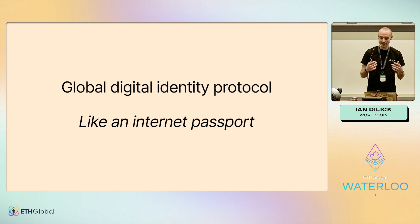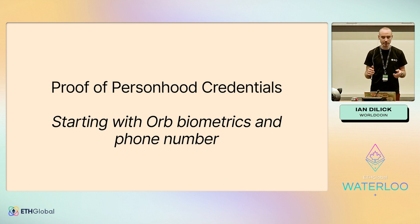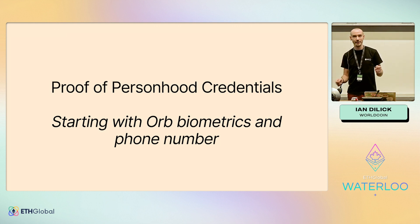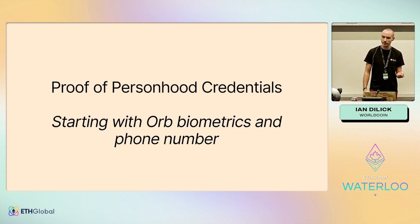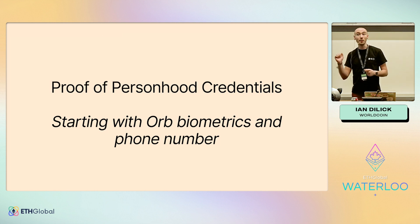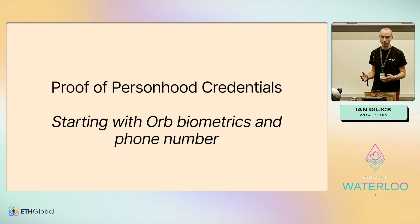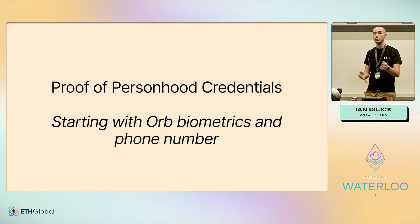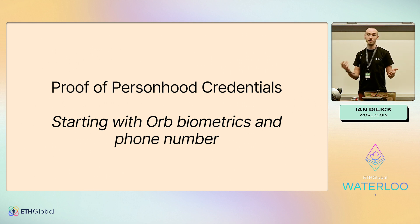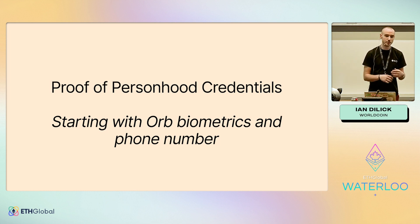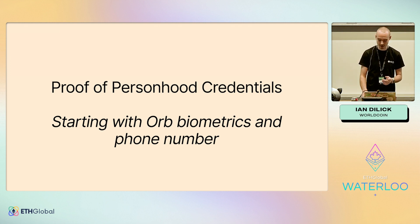The Orb makes sure you're real, checks your iris code, and verifies your uniqueness. World ID is like a global digital identity protocol — an internet passport in a sense — and it supports multiple proof of personhood credentials, starting with orb biometrics and phone number. We see proof of personhood as a spectrum: how strongly can we trust that this is truly a unique human? For some use cases you'll want orb biometrics — the gold standard. For others, just knowing they have a verified phone number in the World App will be enough. We're always looking to add more mechanisms, potentially government ID verification. It's up to app developers to determine where they set the bar.